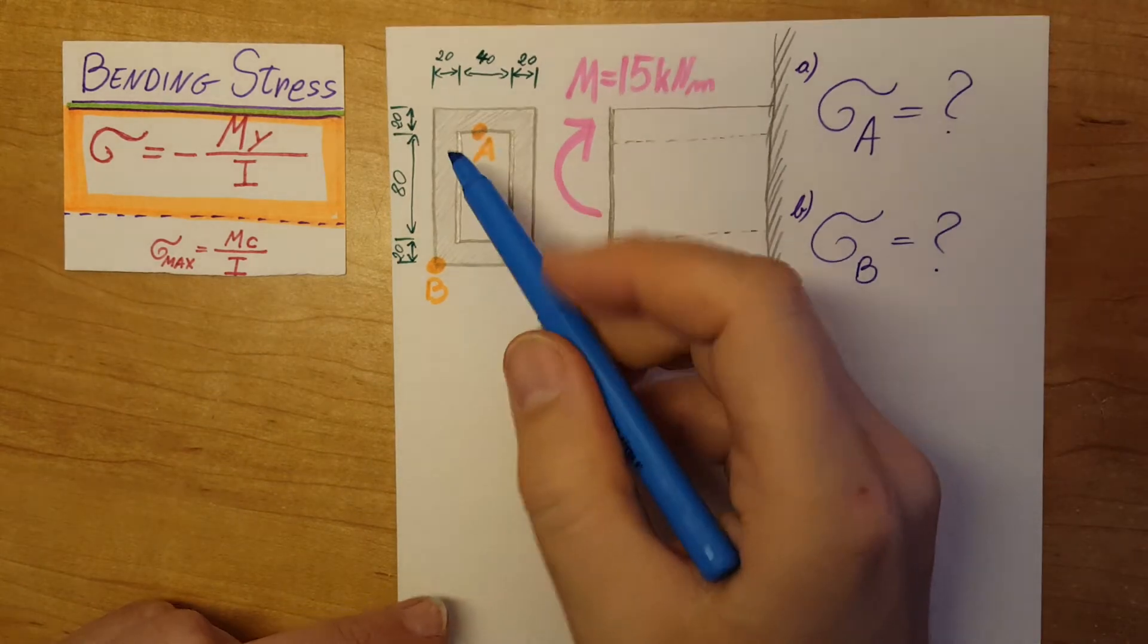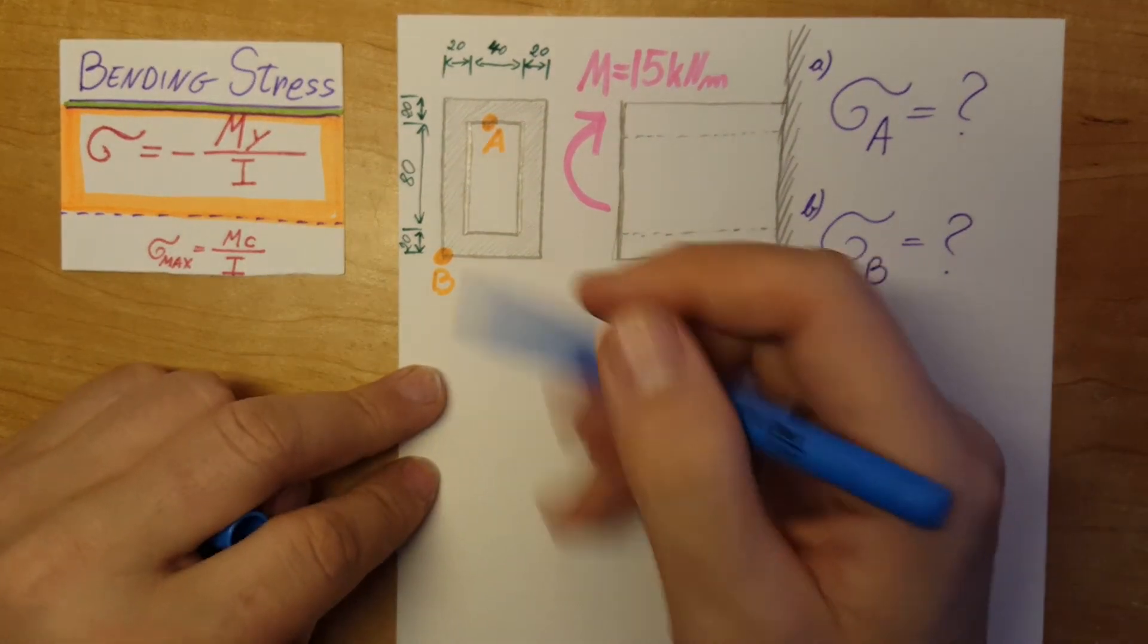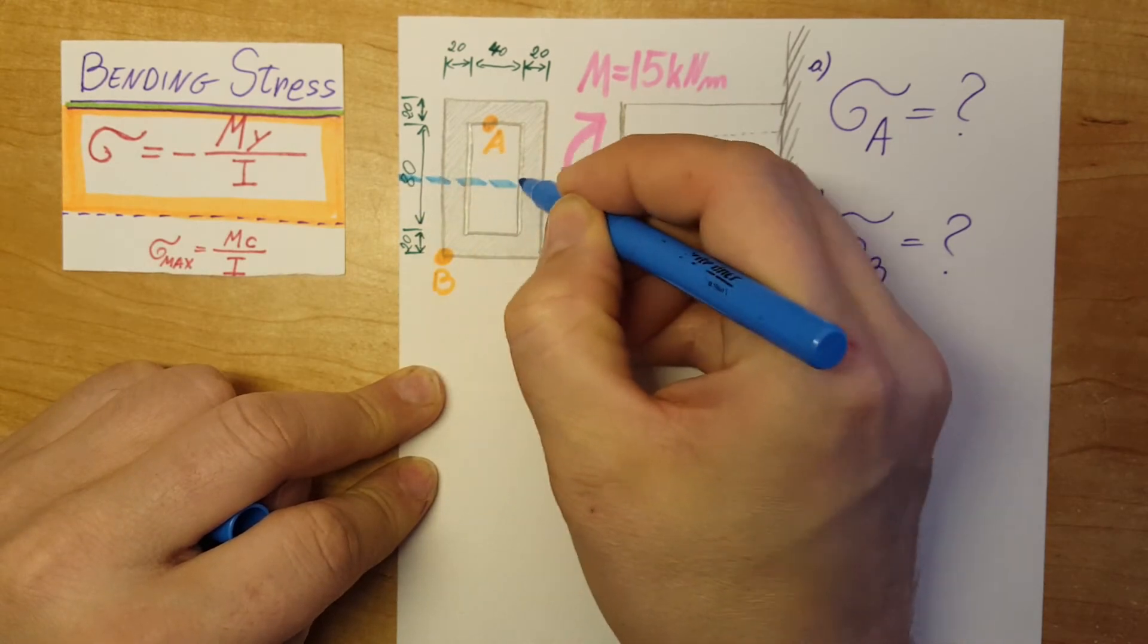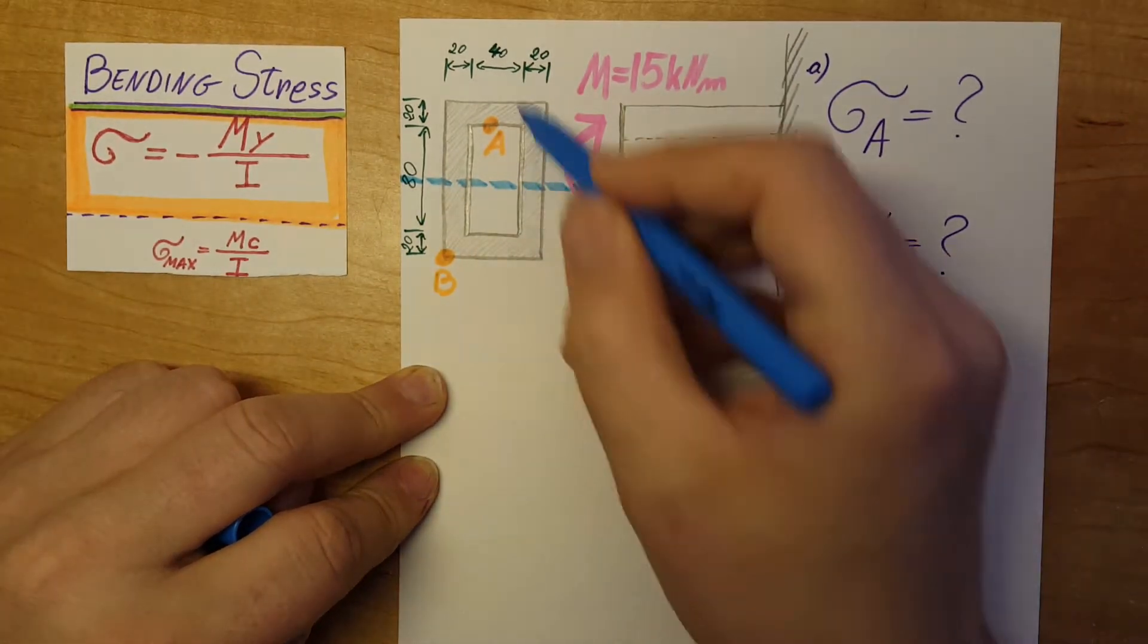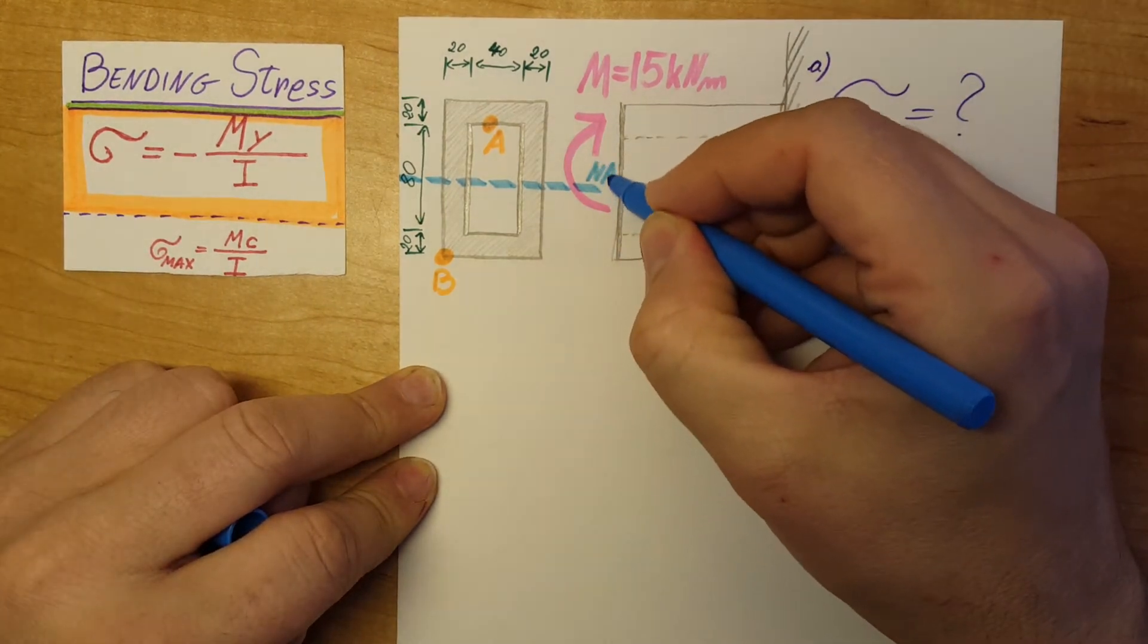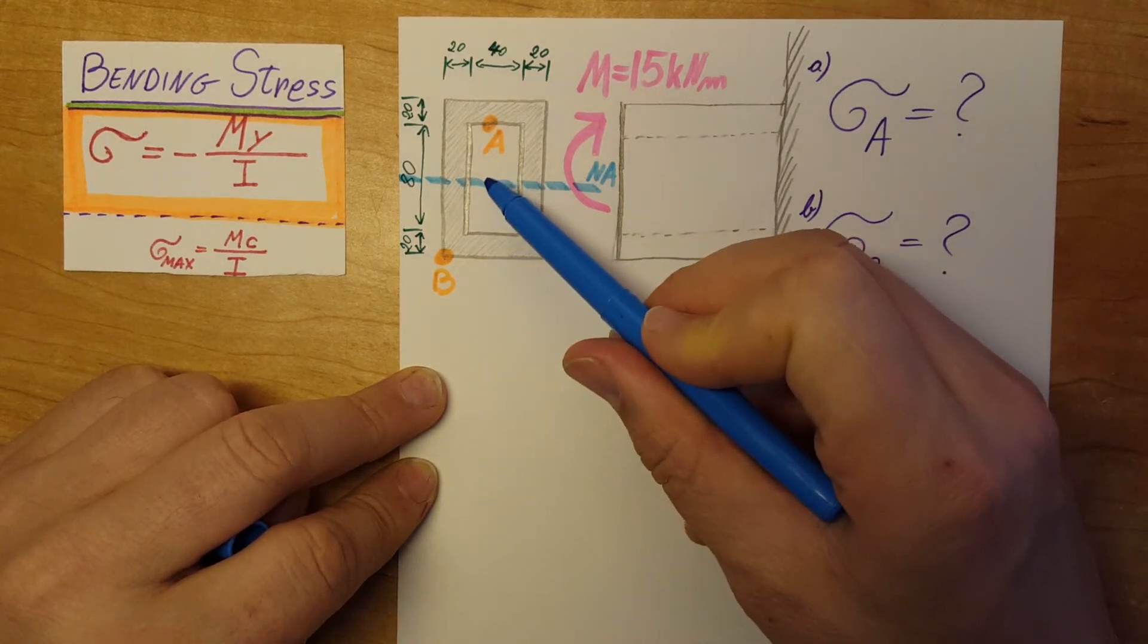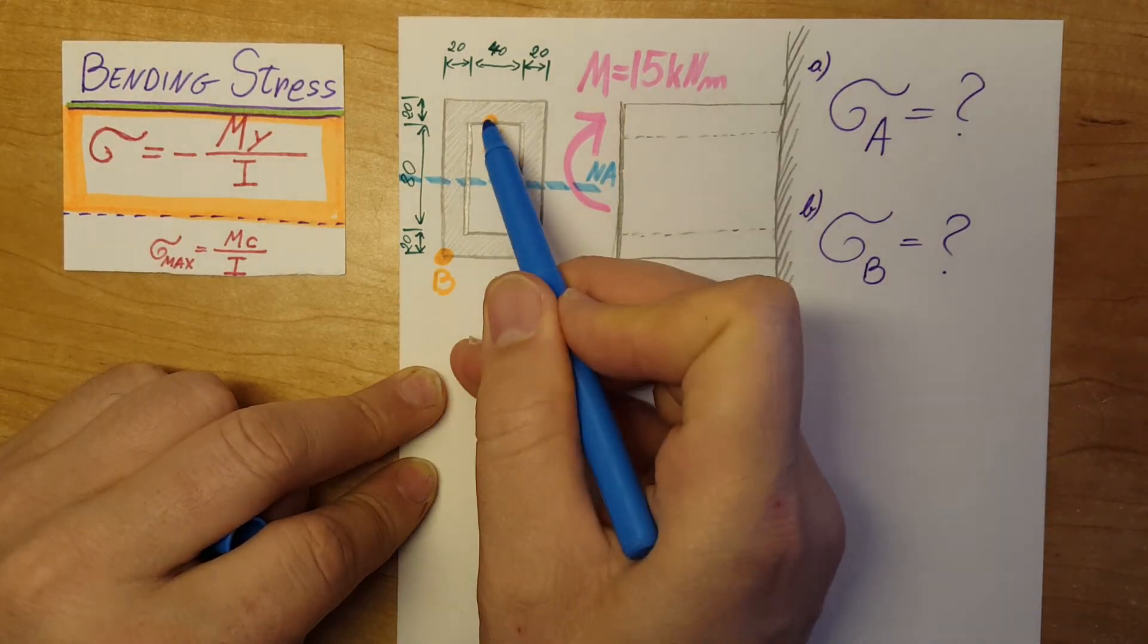Since this is a symmetric shape, we know that the neutral axis will be right here at the center of this rectangle. I'm going to mark it as NA for neutral axis, and now we can go ahead and calculate our Y for point A.